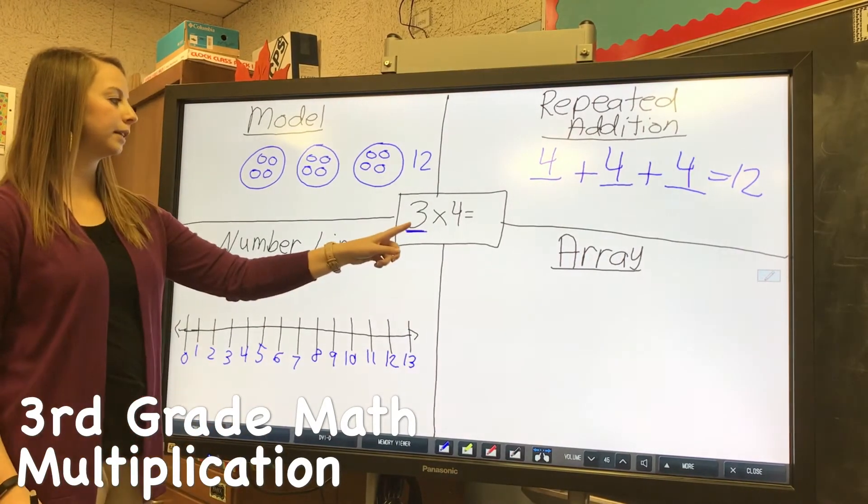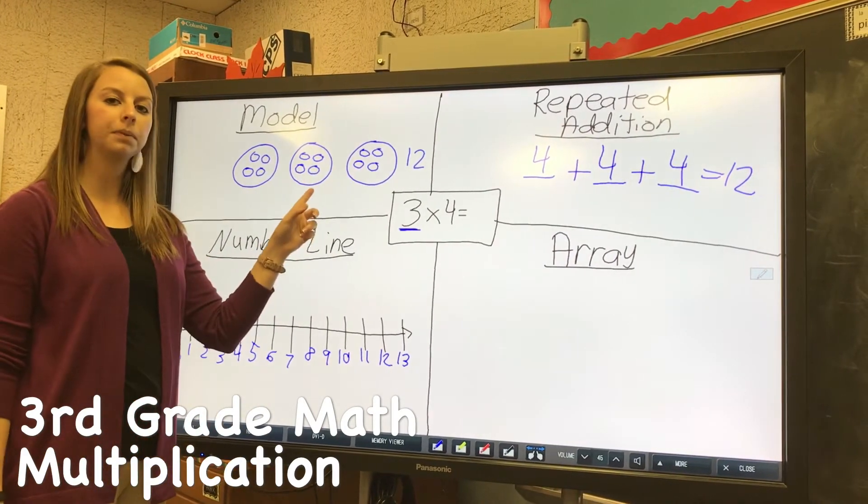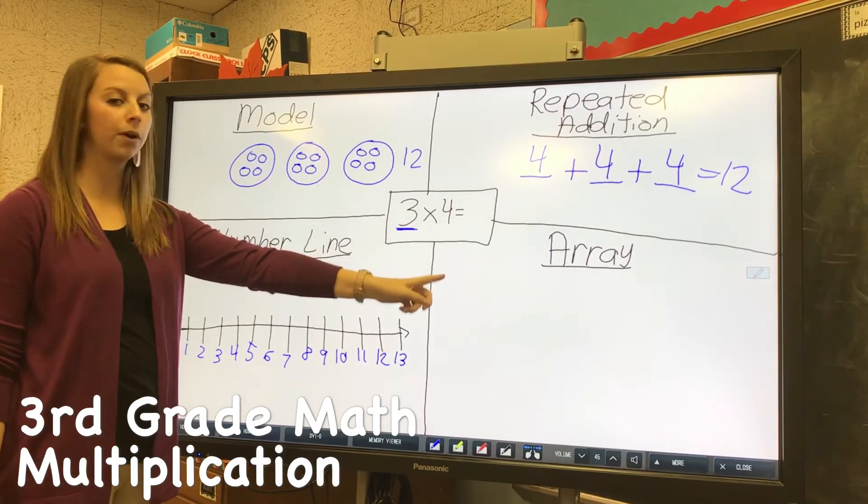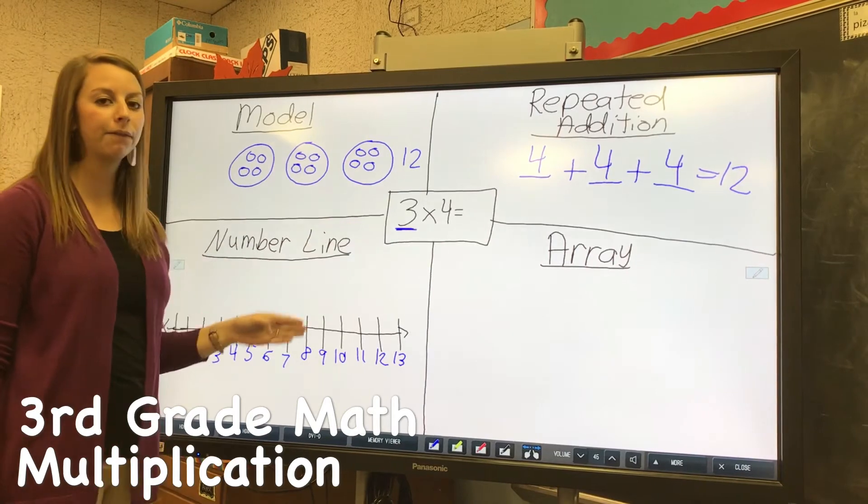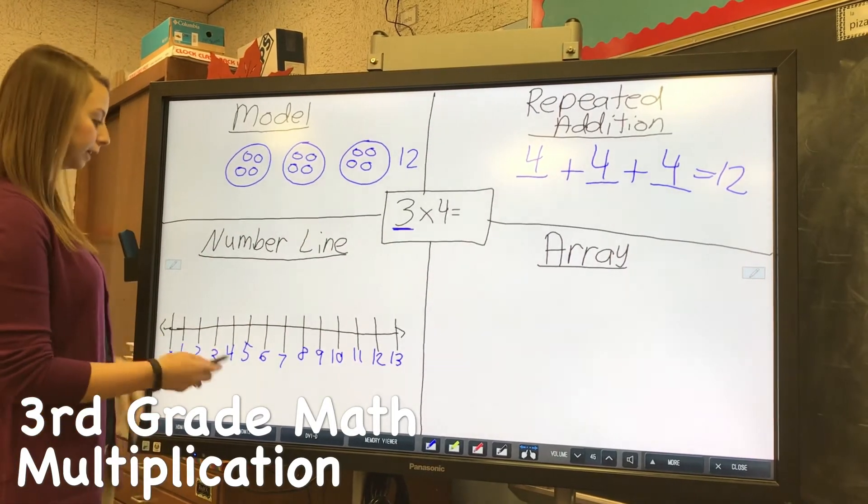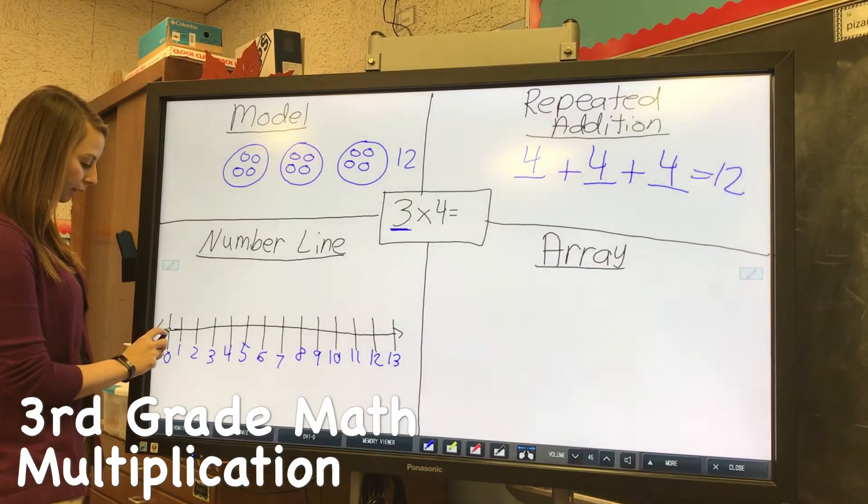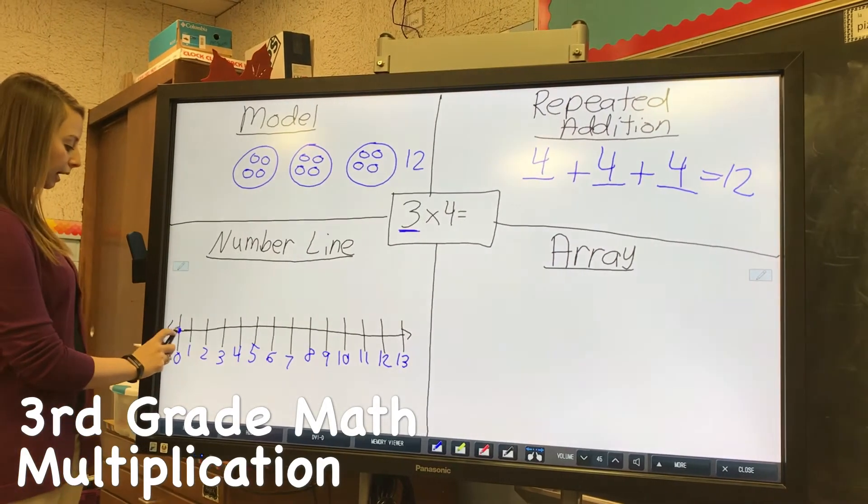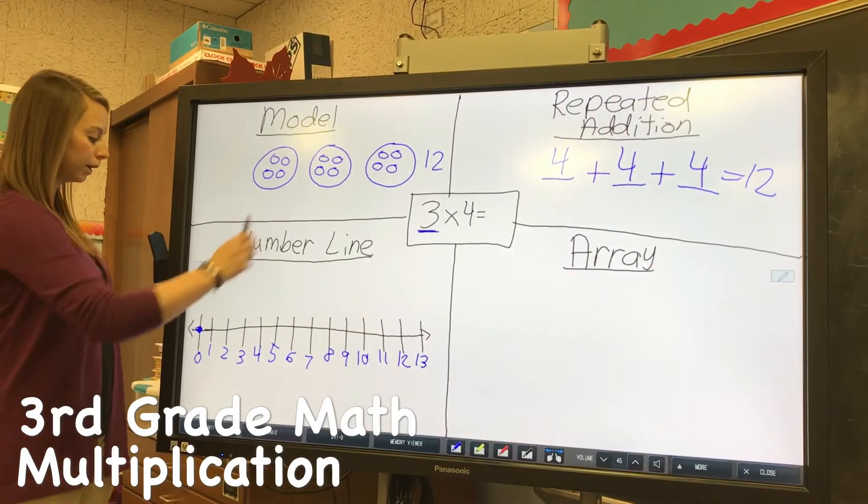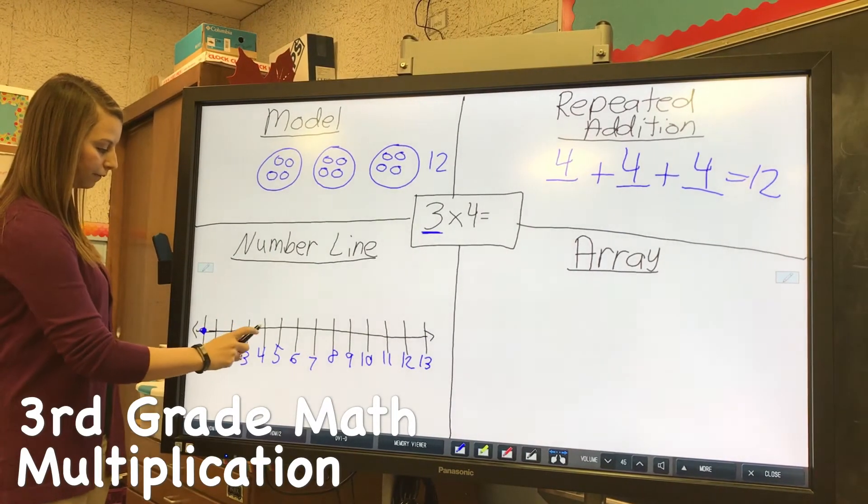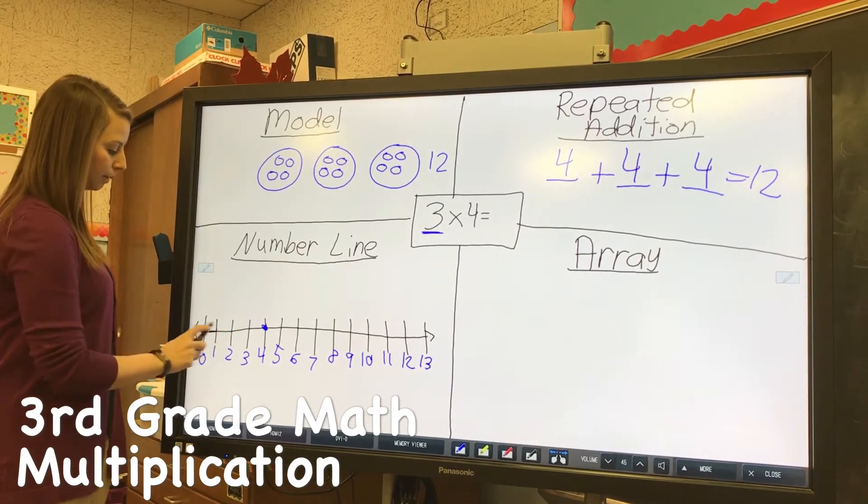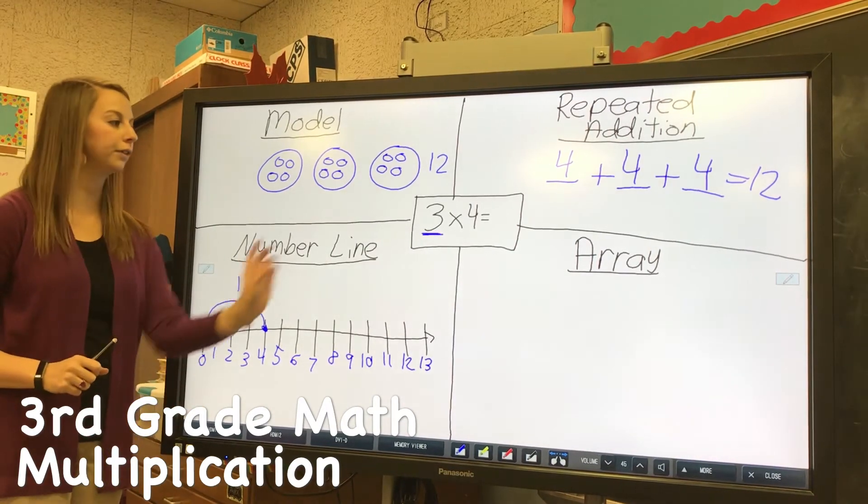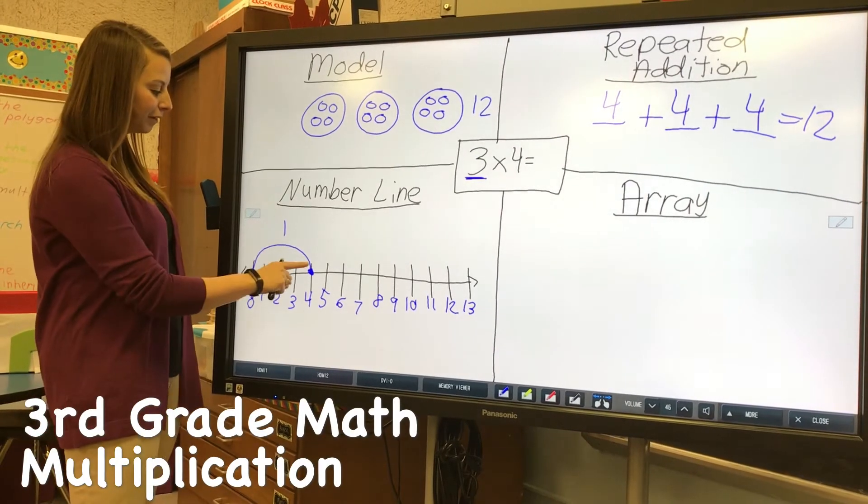Instead of drawing groups, I would say I have three jumps and they're each going to be four spaces. So instead of three groups I now have three jumps, and they're still going to be four in each jump. I always start at zero, so I'm going to make a point at zero and then I would jump four: one, two, three, four, and make another mark. That would be my first jump and I need to do that three times.